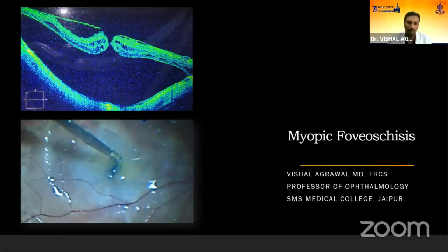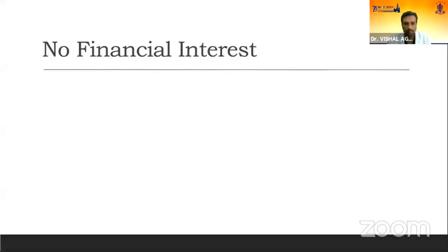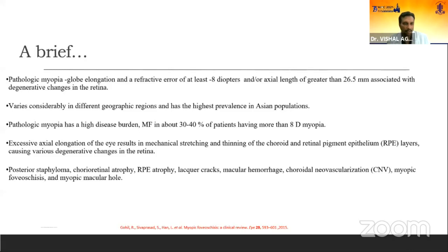Thank you, and I agree that these are very complex cases — no matter how experienced you are, you still feel jittery before a myopic foveoschisis case. Pathological myopia is globe elongation with a refractive error of at least minus 8 diopters or axial length greater than 26.5 mm, associated with degenerative changes in the retina. The highest prevalence is in the Asian population.